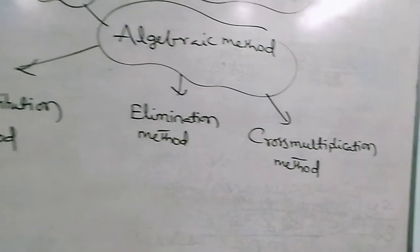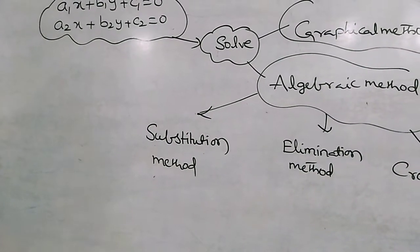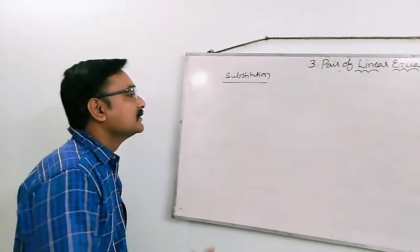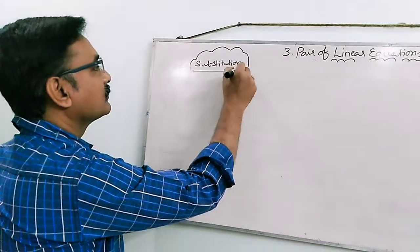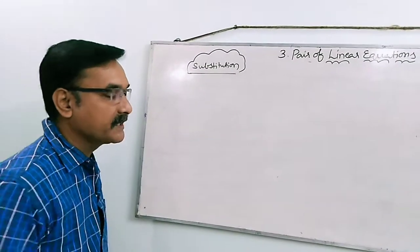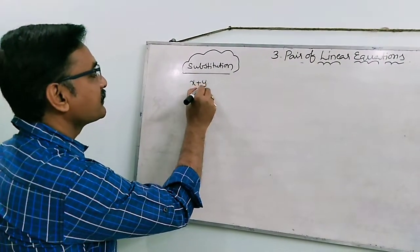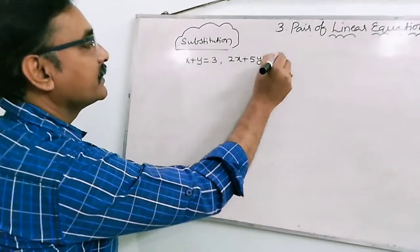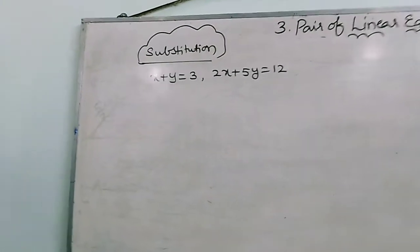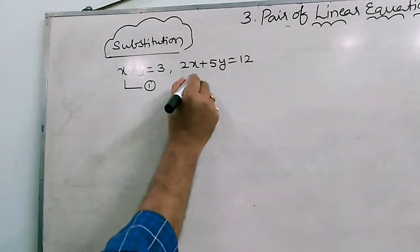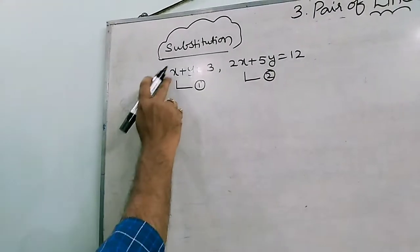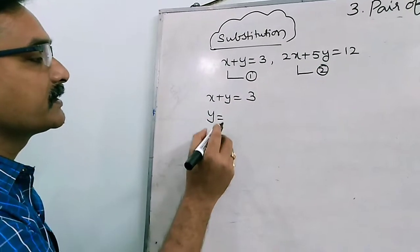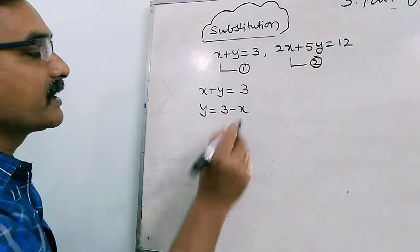Now, step by step, we are going to solve using these methods. By using the substitution method, we can solve one problem so we can understand easily. Let us take one example: x plus y equals to 3, and 2x plus 5y equals to 12. Consider the first equation and the second equation. From x plus y equals to 3, take it as y equals to 3 minus x — that means we are transposing x towards the right-hand side.